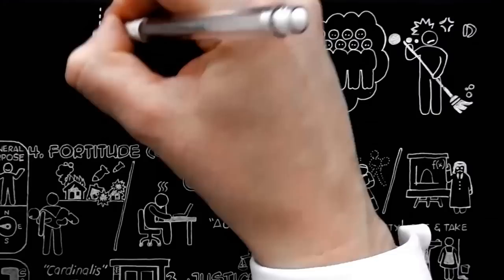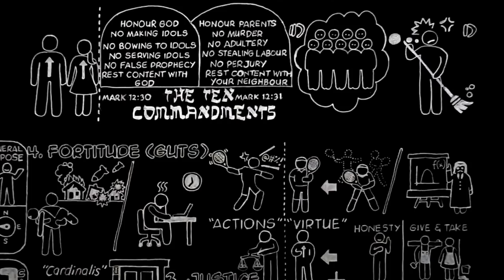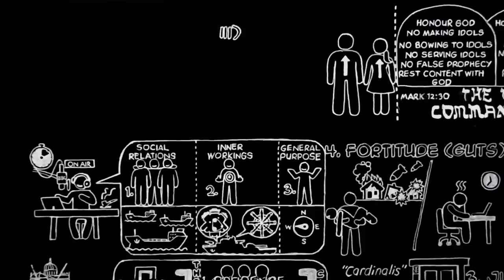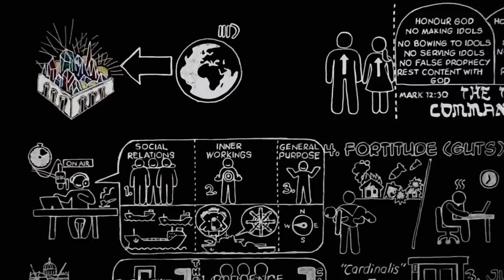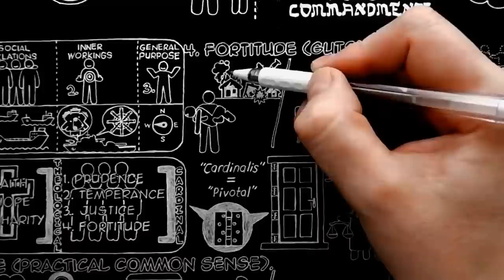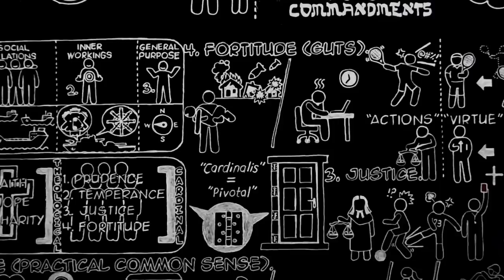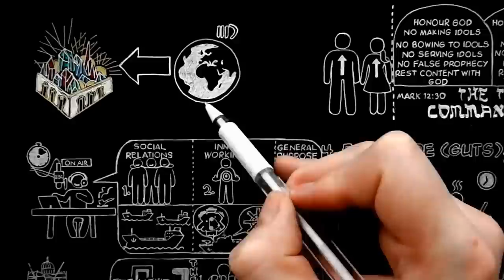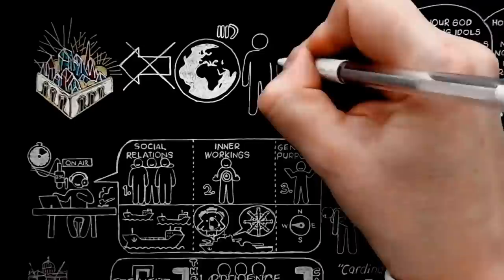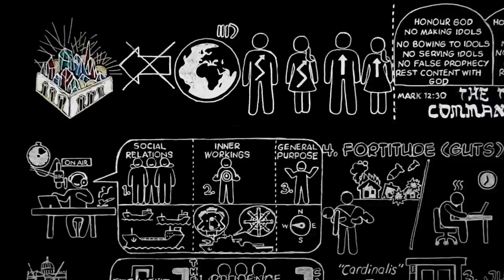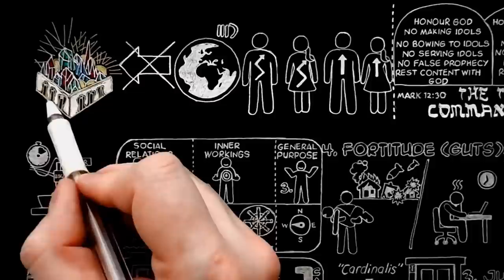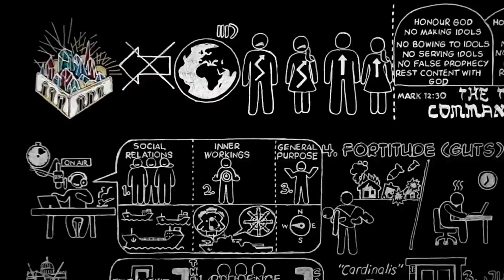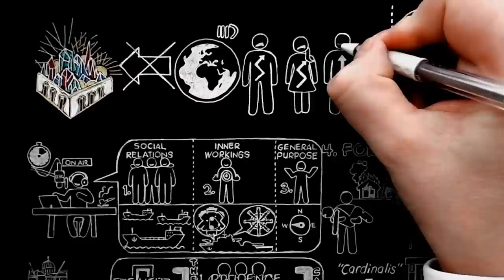Two, we might think that God wanted simply obedience to a set of rules, whereas he really wants people of a particular sort. Three, we might think that the virtues were necessary only for this present life, that in the other world we could stop being just because there is nothing to quarrel about, and stop being brave because there is no danger. Now, it is quite true that there will probably be no occasion for just or courageous acts in the next world, but there will be every occasion for being the sort of people that we can become only as the result of doing such acts here. The point is not that God will refuse you admission to his eternal world if you have not got certain qualities of character. The point is that if people have not got at least the beginnings of those qualities inside them, then no possible external conditions could make a heaven for them, that is, could make them happy with the deep, strong, unshakable kind of happiness God intends for us.